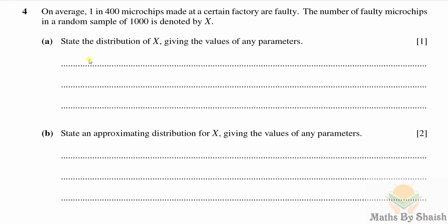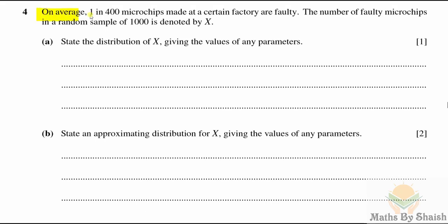Hello and welcome back to my channel. In this video we are going to discuss the last three questions from the Feb/March 2021 Cambridge AS and A Level Mathematics Paper 6, that is Probability and Statistics 2. We have already discussed the first three questions in the previous video, so let's discuss the fourth question.